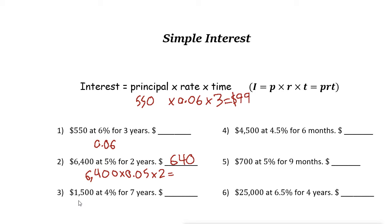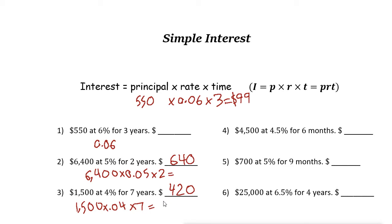Next one: one thousand five hundred dollars at four percent — that's 0.04 — for seven years. Use a calculator: one thousand five hundred times 0.04 times seven. The answer is four hundred twenty dollars. Remember, that is just the interest, so if you pay back the full amount you also need to add the principal: one thousand five hundred plus four hundred twenty dollars.